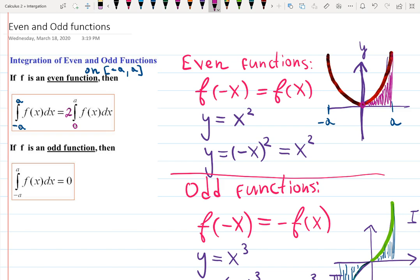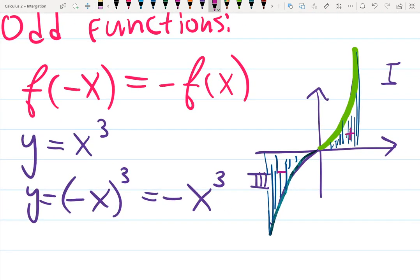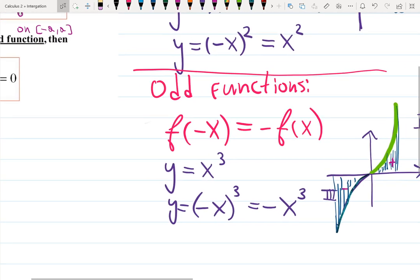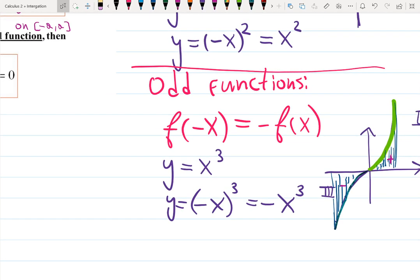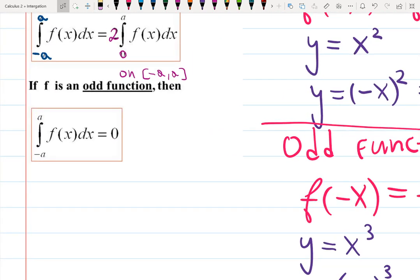Well, if you have an odd function, again, on the interval negative a to a, then look what happens here. This area will be negative, this area will be positive and they have exactly the same value. For example, five but negative and five but positive. What happens when you add up this together? They're basically undoing what they are doing, so the answer will be zero.